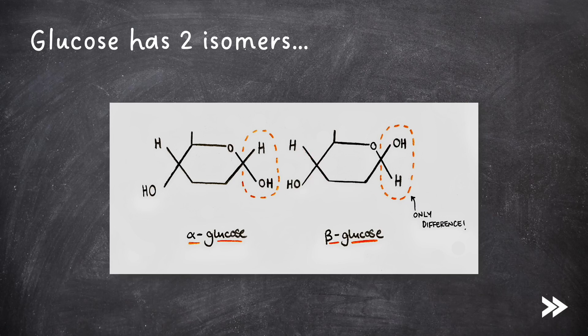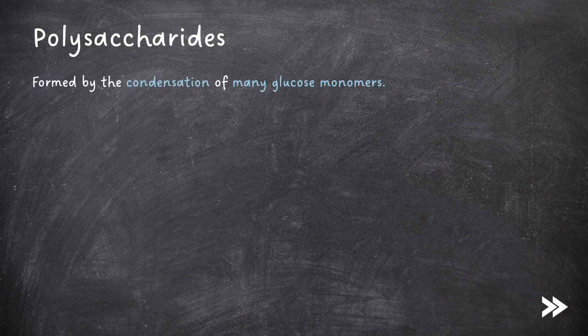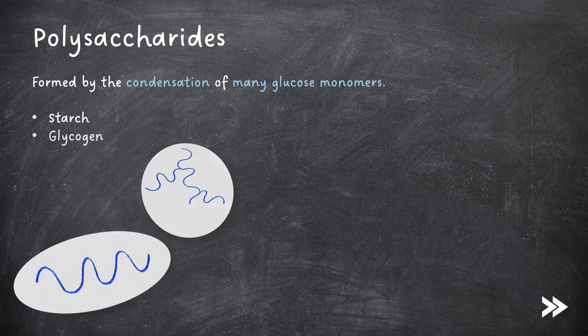Note to learn this diagram as you should be able to draw it in exams. Next we need to know about polysaccharides. These are formed by the condensation of many glucose monomers — hence the name poly, meaning many, and saccharides, meaning sugars, i.e. many sugars. The polysaccharides we need to know about are starch, glycogen and cellulose.